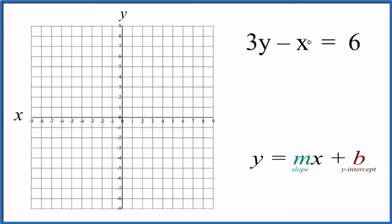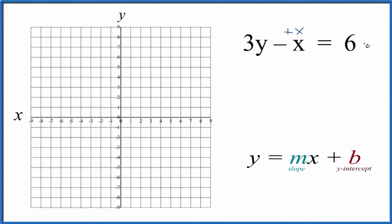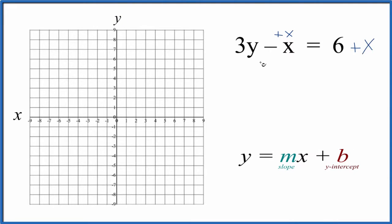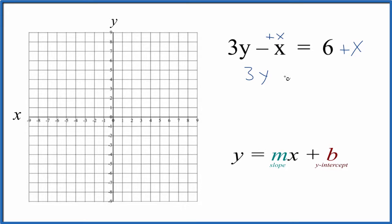Why don't we add x to both sides? That'll give us 3y equals 6 plus x, but I'm going to put x plus 6 since the x comes first here in my slope-intercept formula.